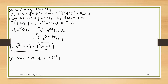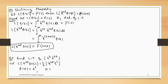Now the example: find the Laplace of e raised to minus 2·t into t raised to 3. Here f(t) is equal to t raised to 3, and equating e raised to minus a·t with e raised to minus 2·t, the value of a is 2.